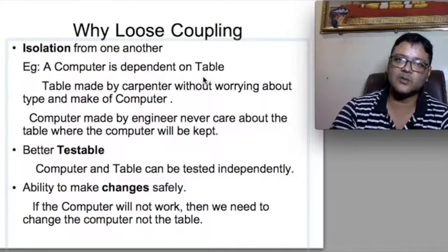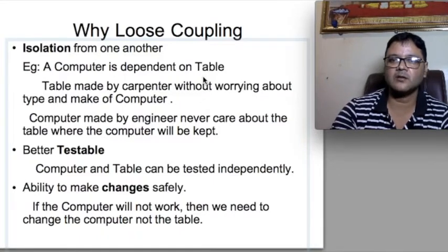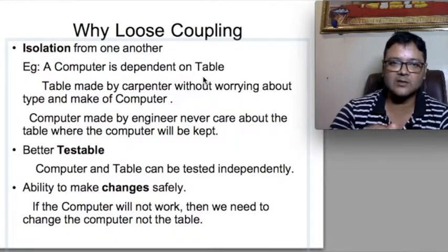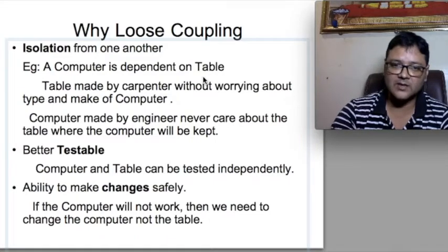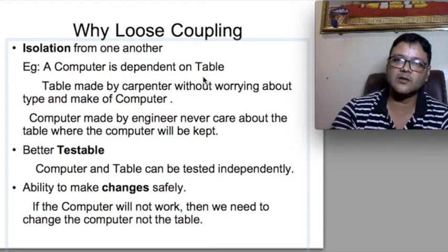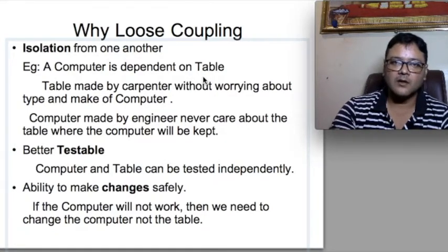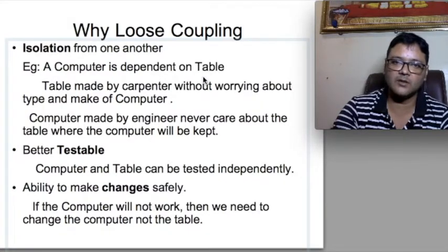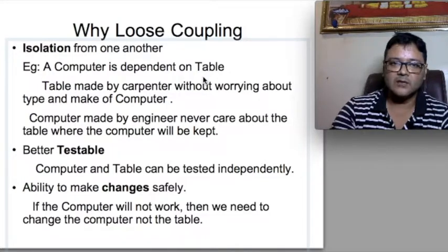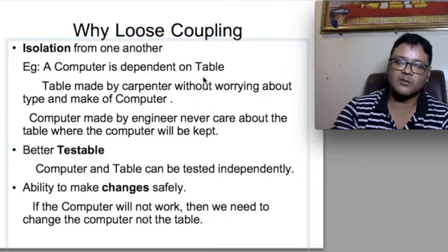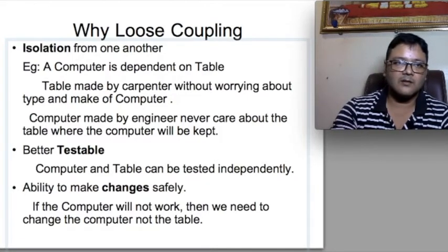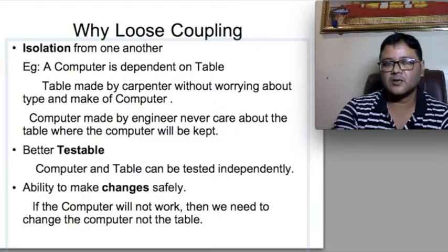That is loose coupling. It's easy to test — if something goes wrong with the laptop, I don't need to break the table to test it; I test the computer. If something goes wrong with the table, I don't need to test the computer. So testing becomes easier with loose coupling. Most importantly, change — in agile development we must always be ready for change requests. If a change request comes and you haven't used loose coupling, you have to rewrite code from top to bottom, resulting in a complete rework from zero.